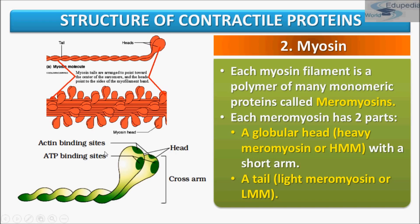The myosin head is where actin binds. The myosin head goes and attaches to the actin binding site, and these are the ATP binding sites. The globular head is an active ATPase enzyme, and it has binding sites for ATP as well as active sites for actin — meaning the globular head goes and binds with the actin protein.